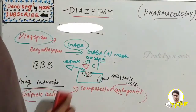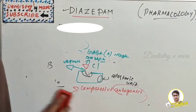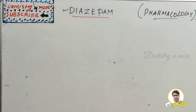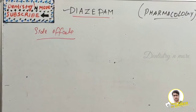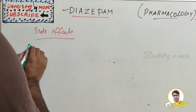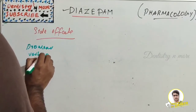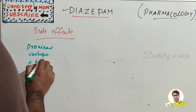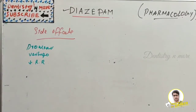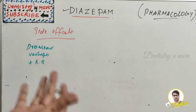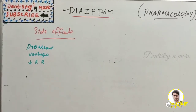Now for the side effects of diazepam — since it crosses the blood-brain barrier, there can be many side effects. Common ones include drowsiness, vertigo, decreased respiratory rate, tachycardia, chest pain, confusion, slurred speech, and headache. Common side effects also include rashes, constipation, nausea, vomiting, menstrual irregularities, and blurred vision.